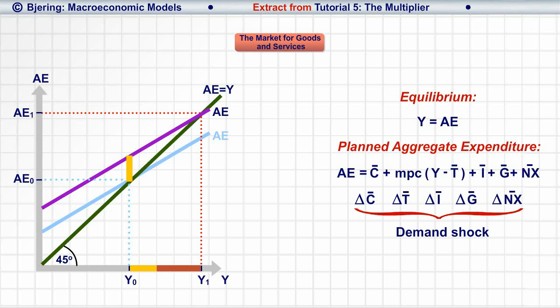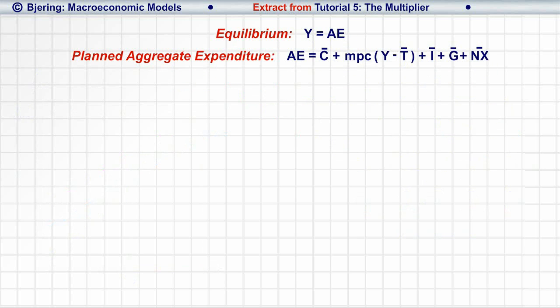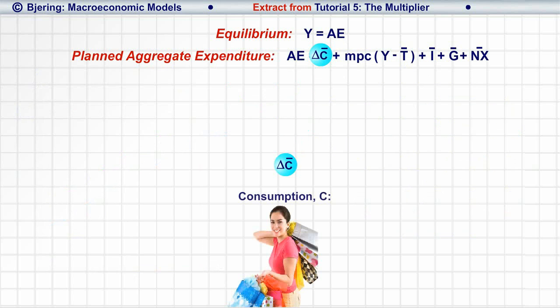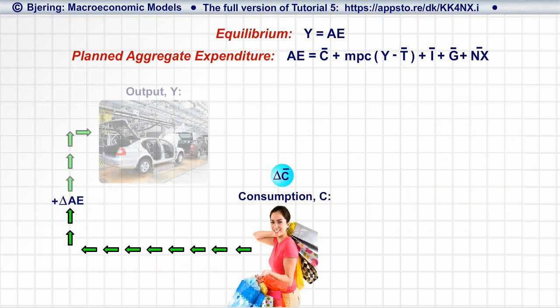How can that be? Look here. Assume again that the economy is hit by a demand shock, like an increase in the consumption function's exogenous term by delta C bar. The increase in C bar increases AE, and since this is a short-term model, the increase in AE is met by an increase in output.